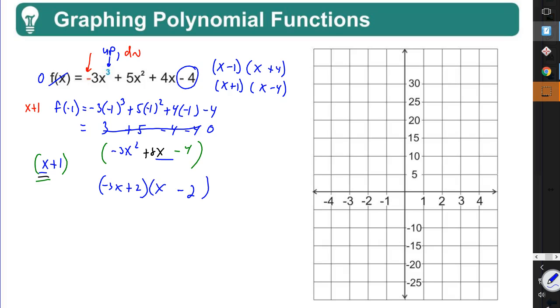So here are the three factors and therefore now my zeros. x equals negative 1. From this one, x equals negative divided by negative is positive, 2 thirds. And from this one, x equals 2. Let's graph our zeros. Negative 1, 2 thirds somewhere about in there, and 2.